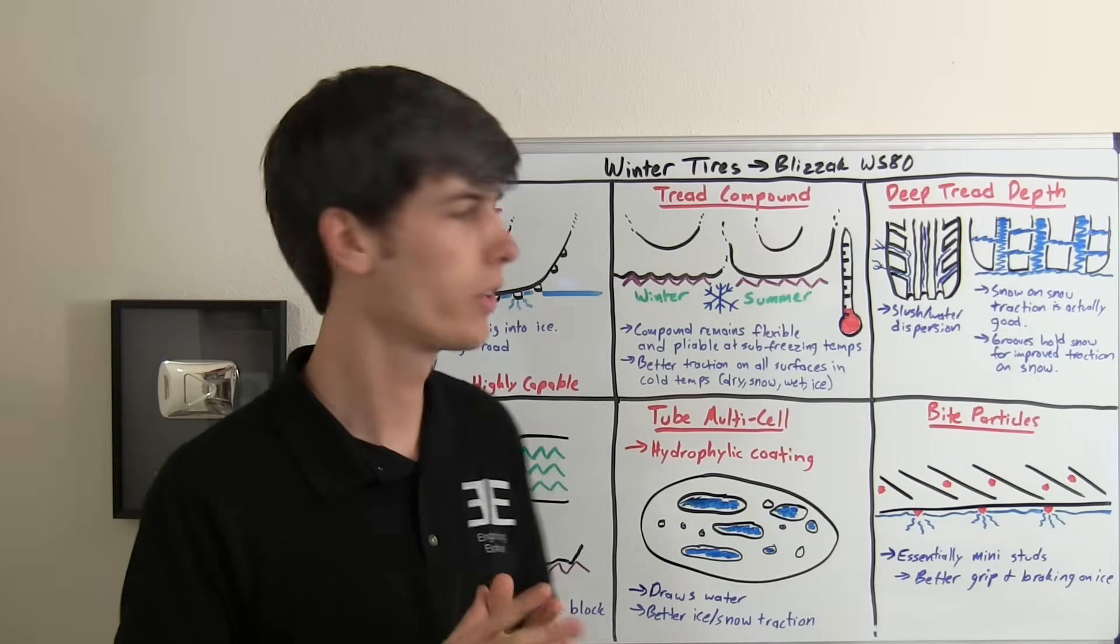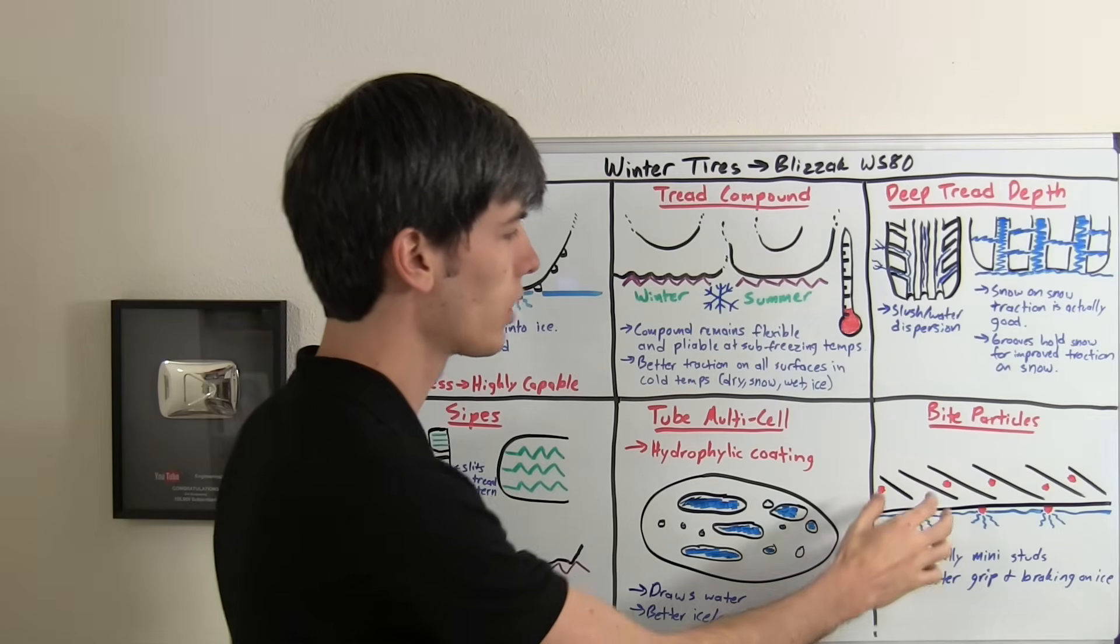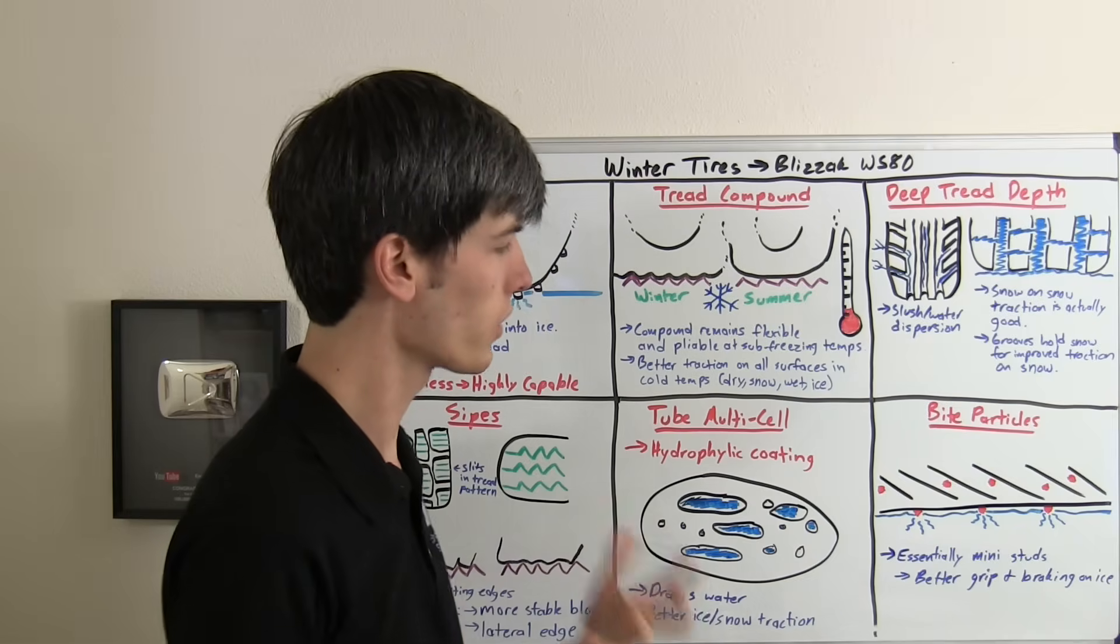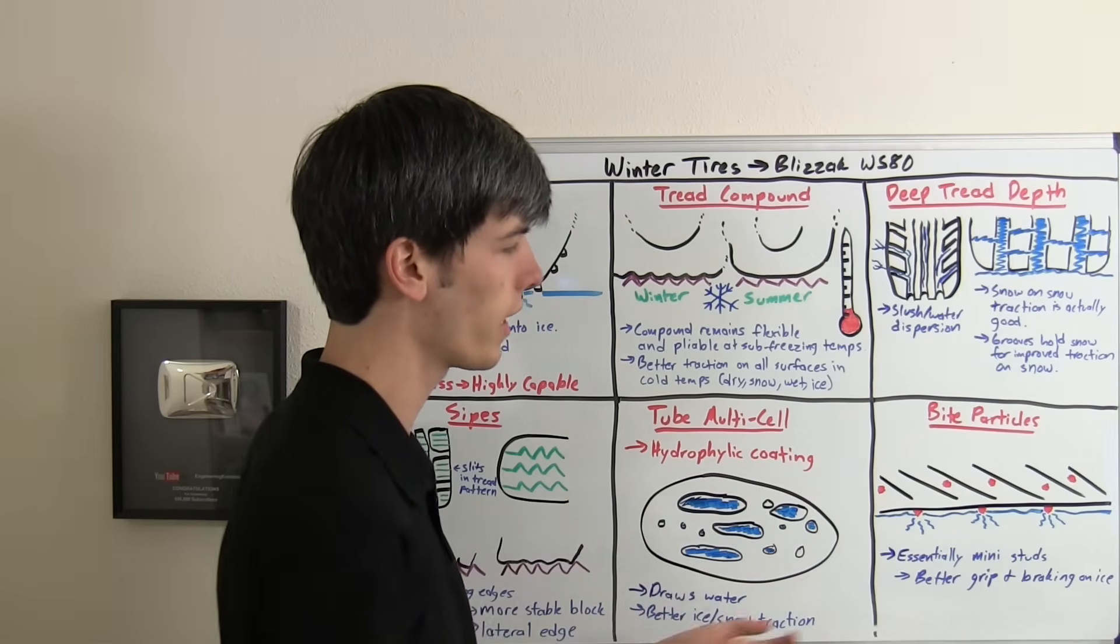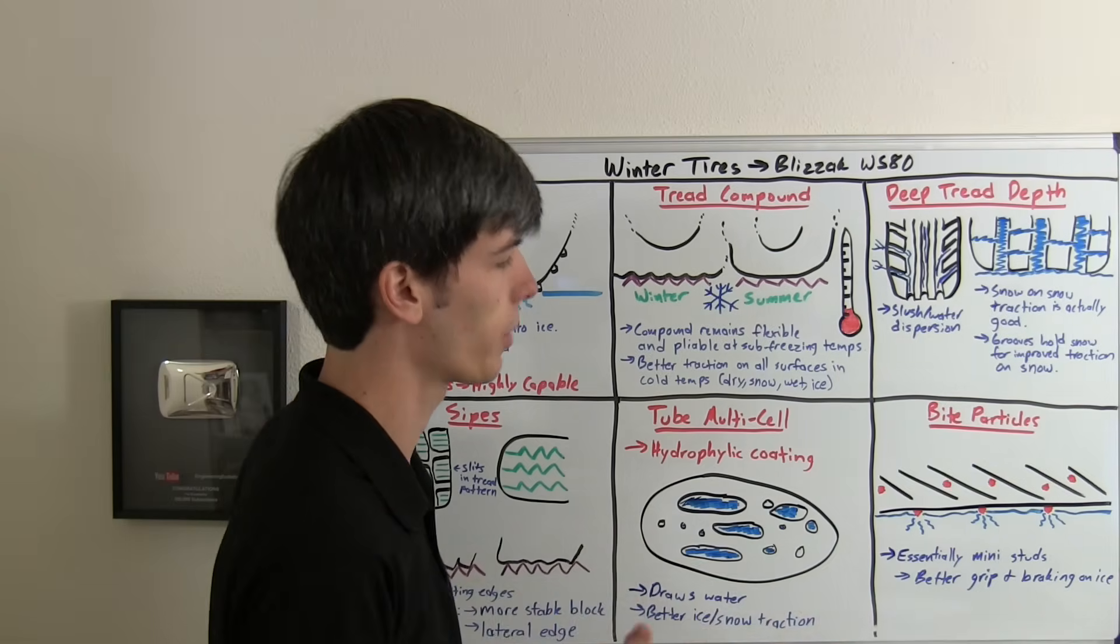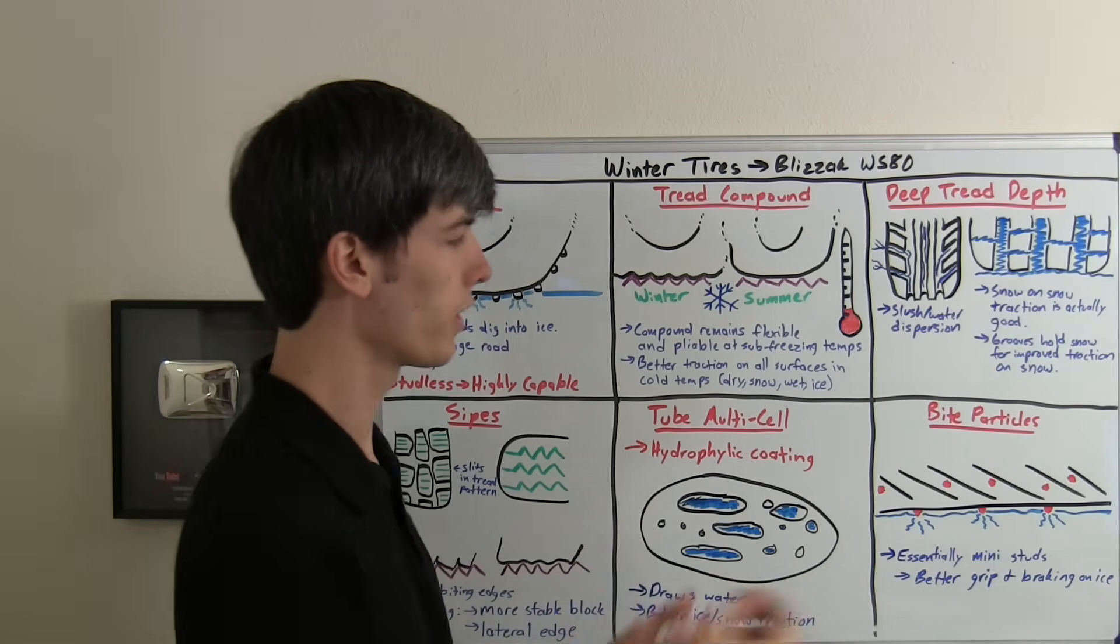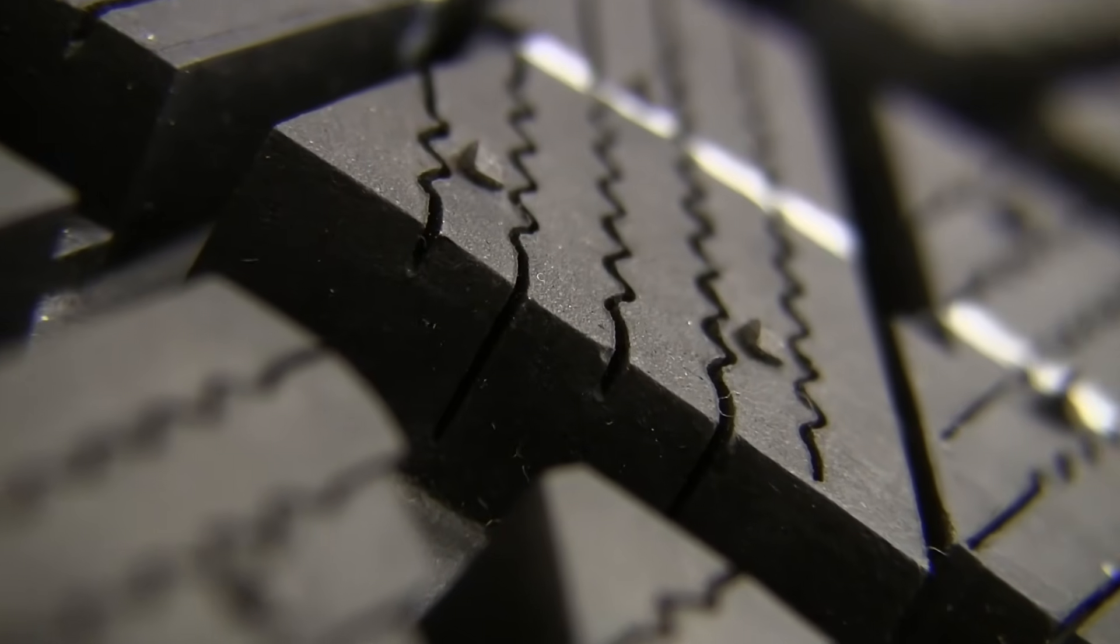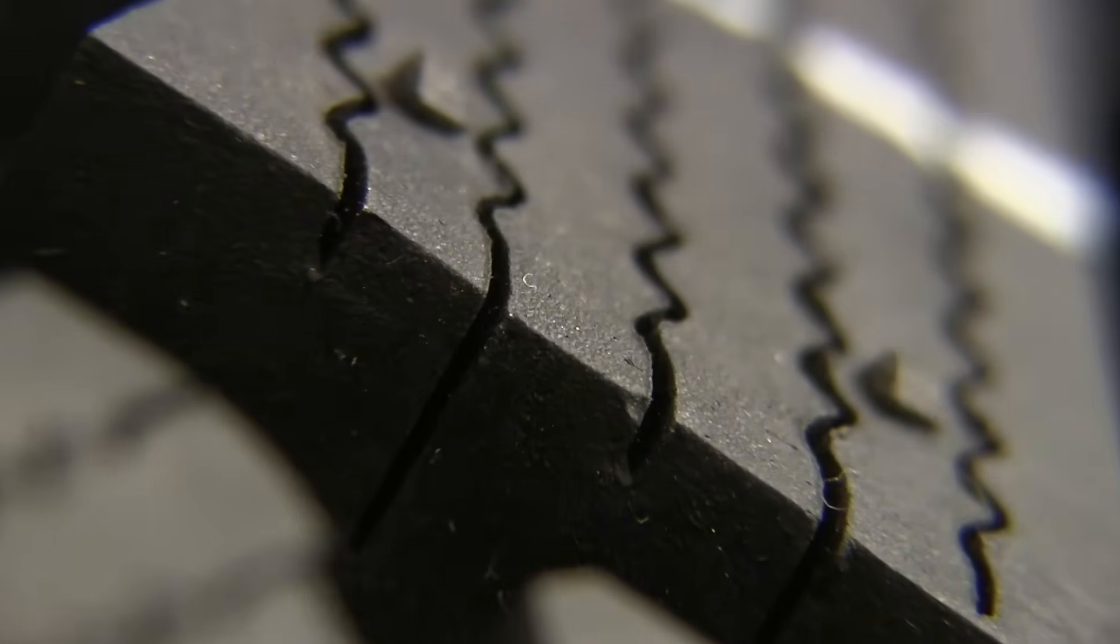One final thing that Bridgestone does with the WS80 tires: they include these bite particles within the compound of the tread. Essentially what this is, is little miniature studs that as the tire wears, more of them appear, so you're always going to have some of them available. Basically what these mini studs are doing is breaking into the ice and helping to give you better grip and braking on ice.